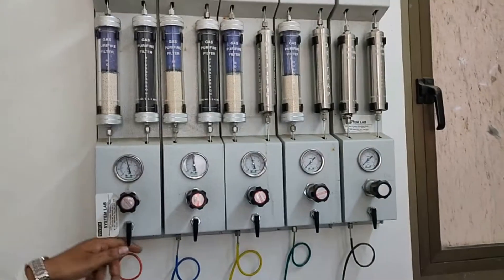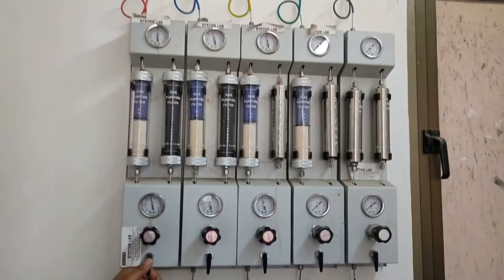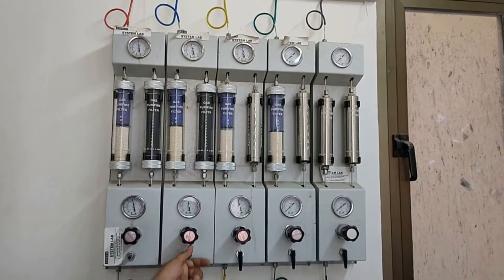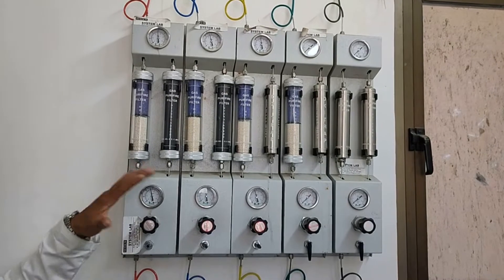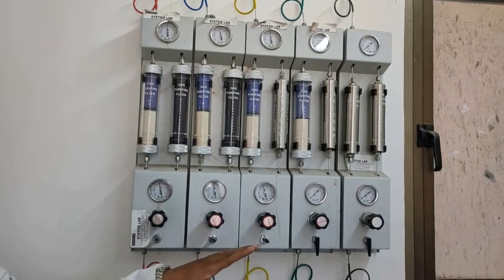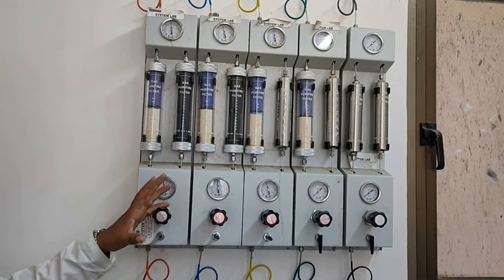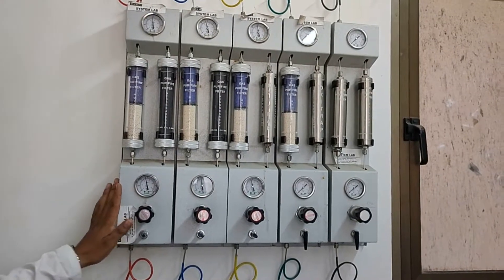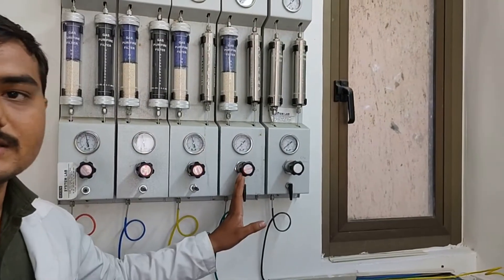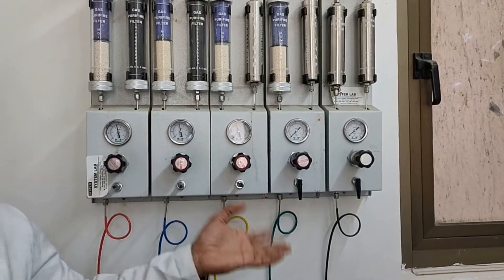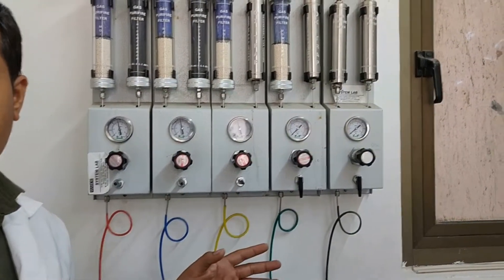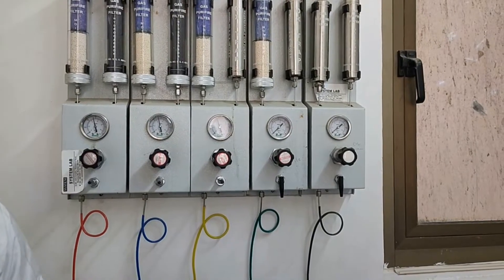Now come to the gas fuel. This is the gas regulator, just push on. So gas is starting up. Here the hydrogen, zero air, nitrogen, helium gases are using. For the hydrogen, the zero air must be required for the flame generation. Nitrogen and helium gases as the carrier gases. Carrier gases is useful for the transport of the compound sample from one place to another place.